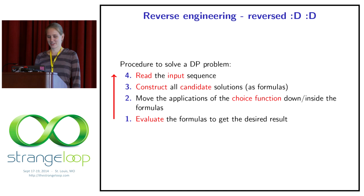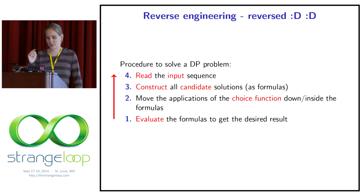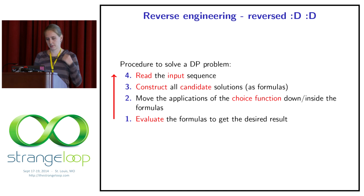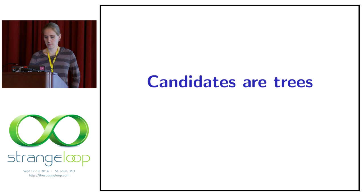Let's reverse engineer this reverse engineering. From this we can deduce a procedure: first, the input sequence can be found at the leaves — we read the input sequence. Then from the input sequence we construct all candidate solutions as formulas. Then we push down the applications of the choice function inside the formulas as far as possible. And then we evaluate the formulas to get the desired result — our number 42 in this example.